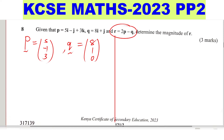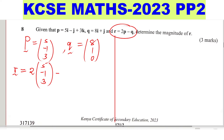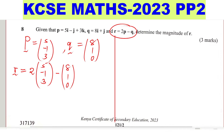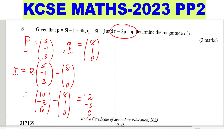We need to get r, which is given by 2p minus q. So r equals 2 times the column vector (5, -1, 3) minus the column vector (8, 1, 0). Multiplying by 2: 2 times 5 gives 10, 2 times negative 1 gives negative 2, 2 times 3 gives 6. Then subtracting: 10 minus 8 gives 2, negative 2 minus 1 gives negative 3, and 6 minus 0 gives 6. So r is the column vector (2, -3, 6).